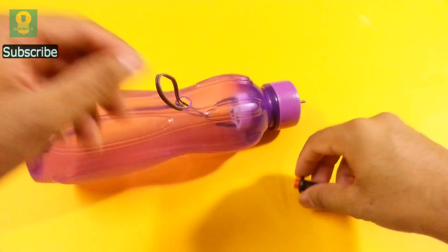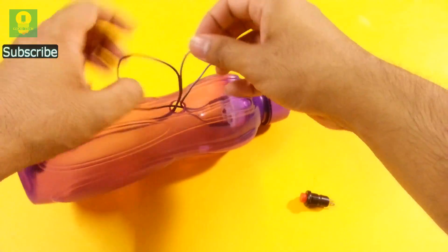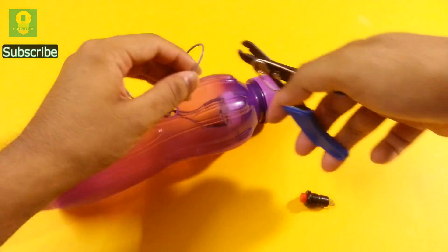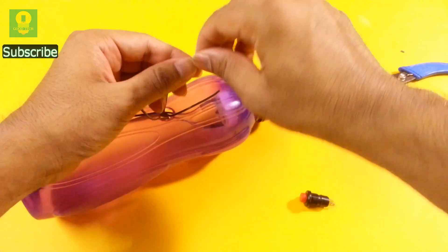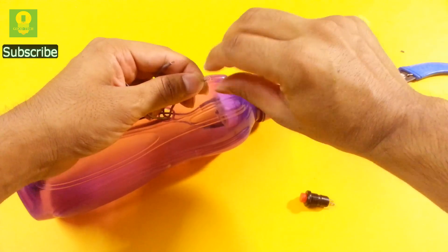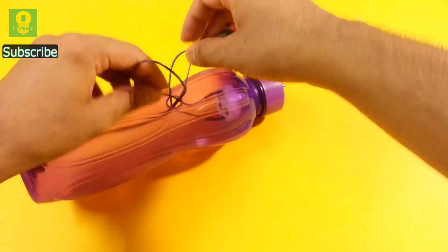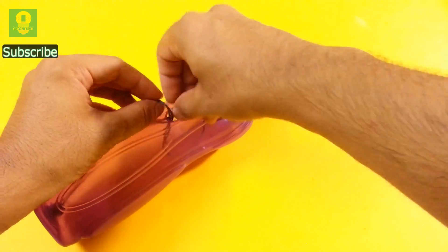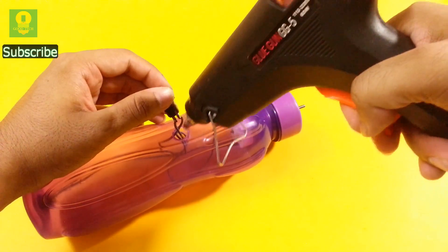Now take the switch. Cut one of the wire from the center and solder them to the switch. Using hot glue, attach the switch to the plastic bottle.